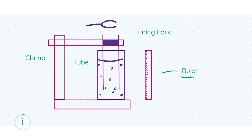First, we have our ruler on the left-hand side, which is used for measuring the gap and the depth of the tube inside the resonance tube. We also have a tuning fork on top of the apparatus, and a clamping system on the left-hand side that holds the resonance tube.